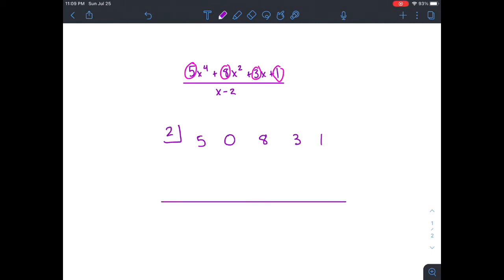Alright, so the first step, we just drop down the first coefficient. And that's a 5. Then what we're going to do is we're going to multiply 5 by whatever number is up here, which is 2. And that gives us 10. Then we add the 0 and 10 to get 10.